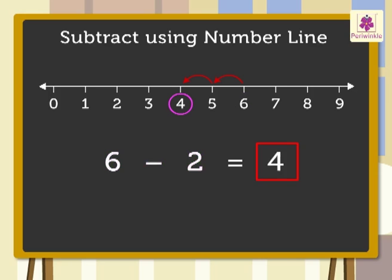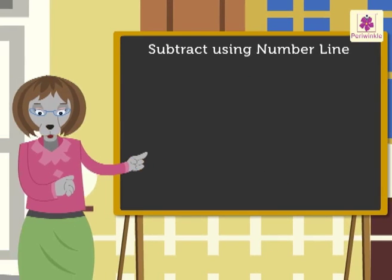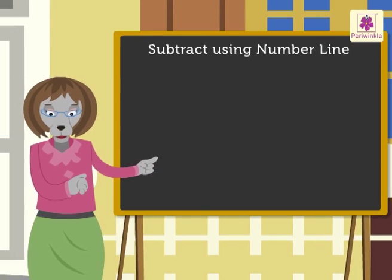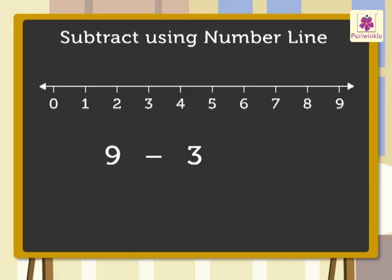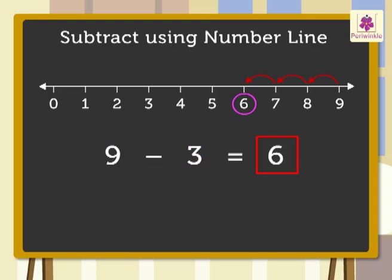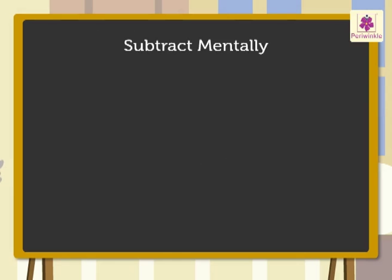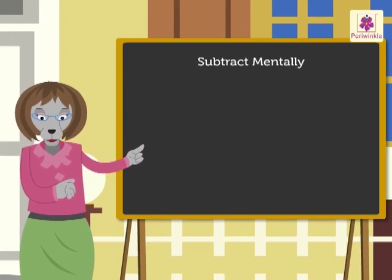Let's do it once again with another example. Subtract nine minus three using the number line. Draw a circle on the minuend, that is nine. Take three steps to the left of nine. Six is the number you reach, so nine minus three is six.